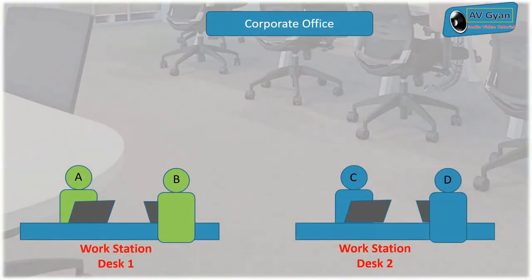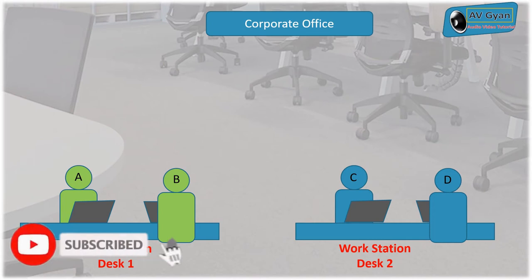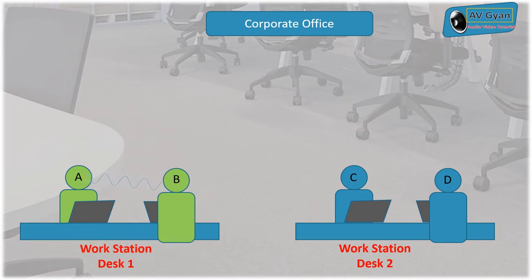There are two scenarios. Scenario one: C and D are not interested but have to listen because they don't have any choice. Scenario two: persons C and D are purposely trying to get information from the conversation happening between A and B. In both scenarios, it is important for an organization to block any breach in the privacy of speech.